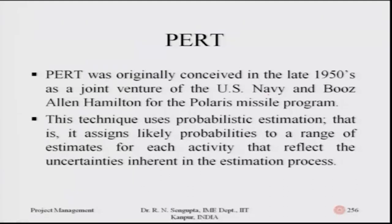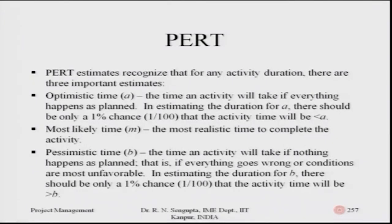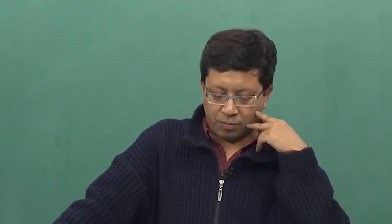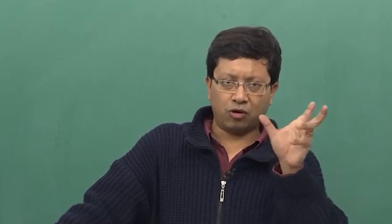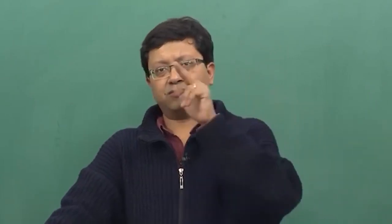PERT was originally conceived in the 1950s as a joint venture of the US Navy and Booz, Allen and Hamilton for the Polaris missile project. This technique has probabilistic estimation — it assigns likely probabilities to a range of estimates for each activity, reflecting the uncertainty inherent in the estimation process. PERT recognizes three important time estimates: T_B (pessimistic), T_O (optimistic), and T_M (most likely).